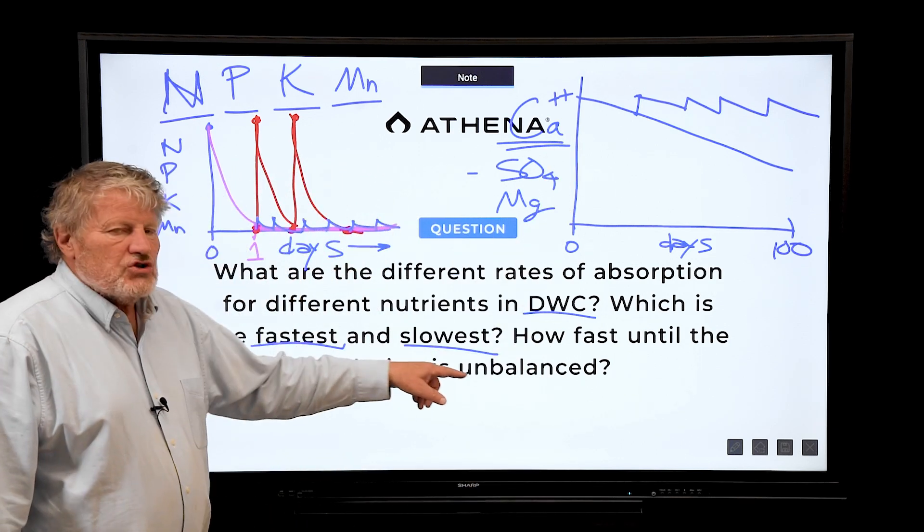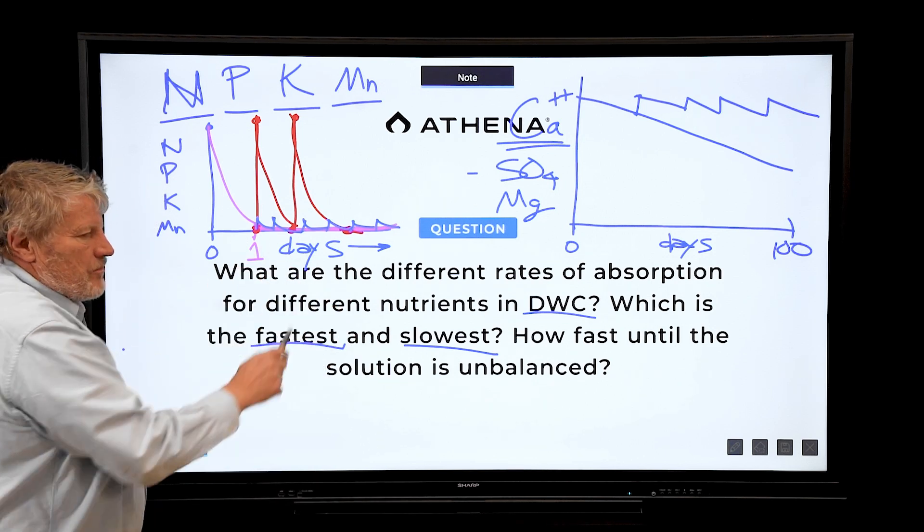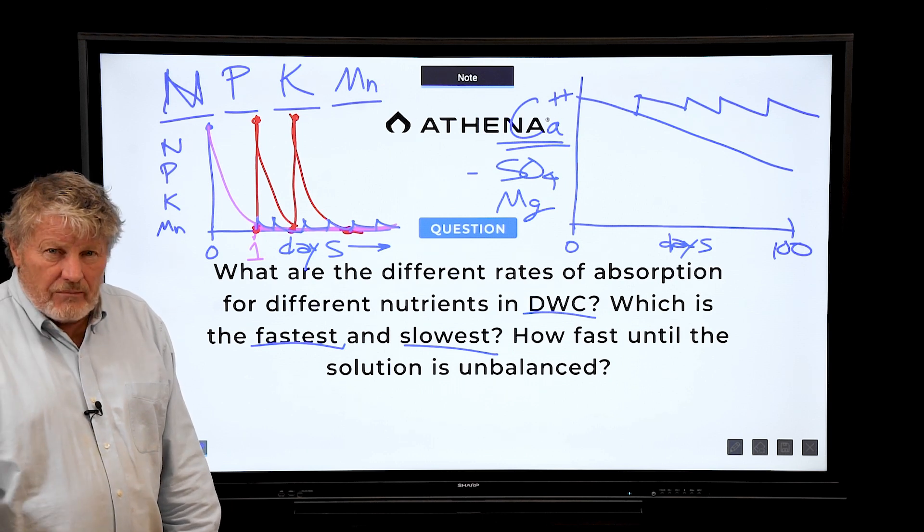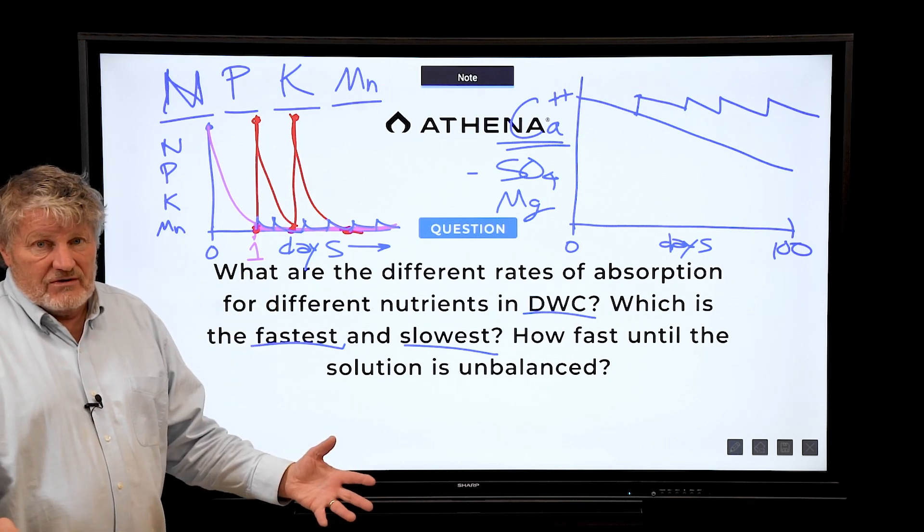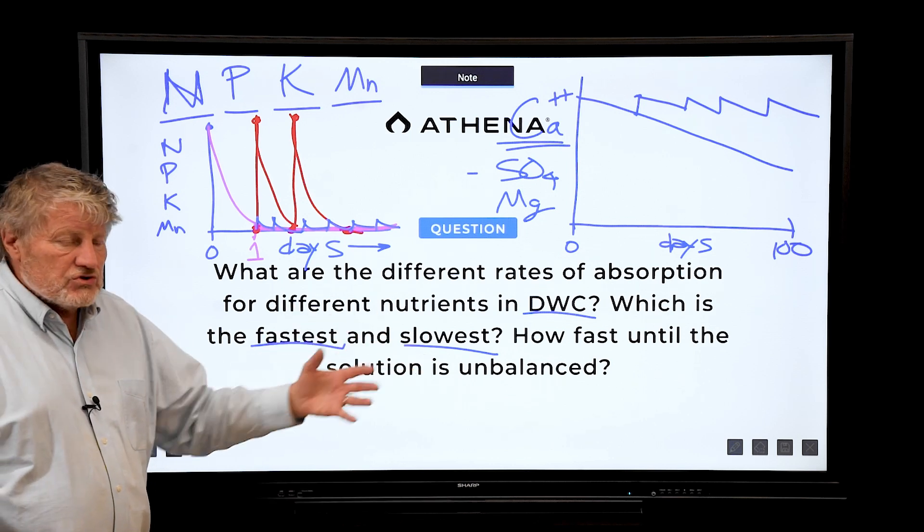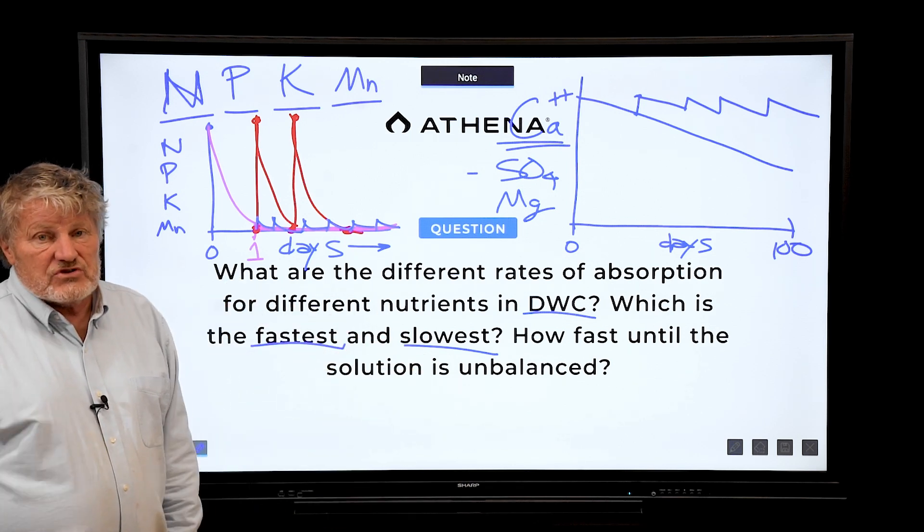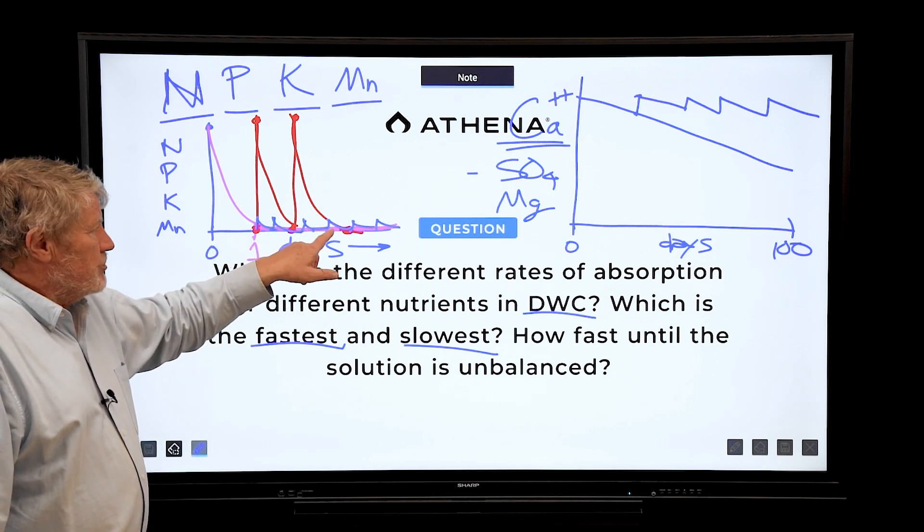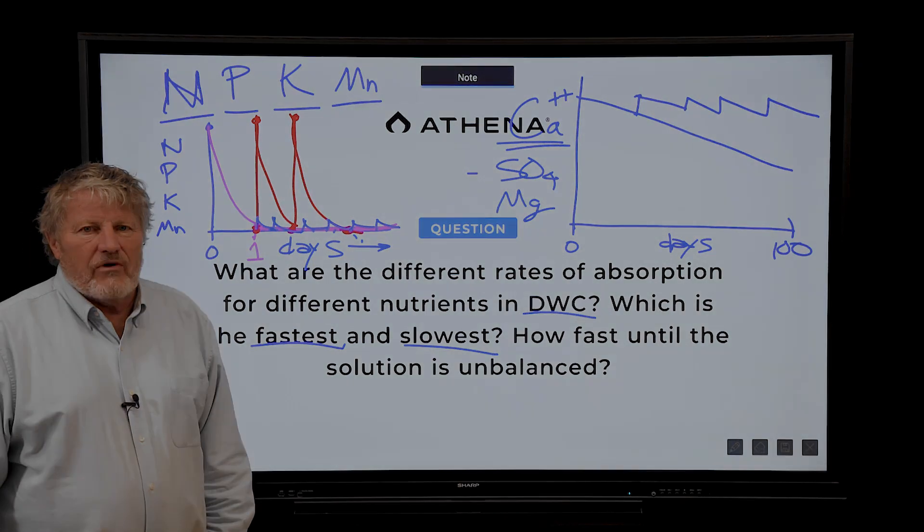How fast until the solution is unbalanced? Well, if you feed it properly, you're irrigating with nutrient solution every time it's balanced when you fertilize. You don't have to monitor what's in the root zone. You're feeding it a balanced solution right from the start. So that's a different concept than monitoring the root zone like here and then panicking. Just put it on the right feed and stick with the program.